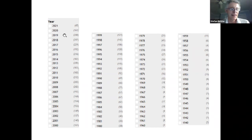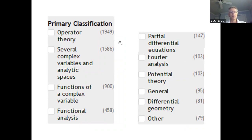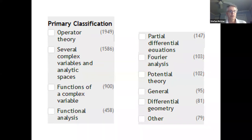Even since I accepted the invitation to give these talks, roughly 300 papers have been written. So what is all this about? According to MathSciNet, many of these papers are in operator theory, many in several complex variables and analytic spaces, and then functions of a single complex variable and functional analysis seem to be more general ones.